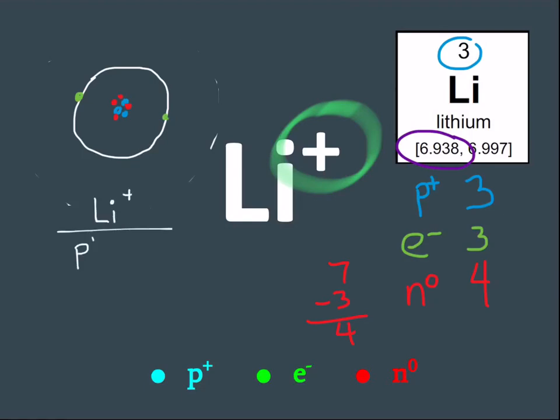So let's write it out. Li plus, there's three protons, four neutrons. And since lithium is missing an electron, there's going to be two electrons. Let's do another problem.